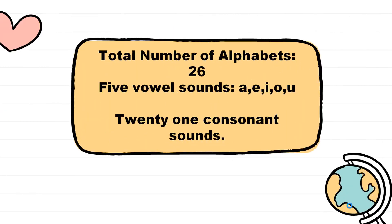When we talk about the English language, we have 26 alphabets, of which 5 are vowel sounds — A, E, I, O, U — and the remaining 21 are consonant sounds.